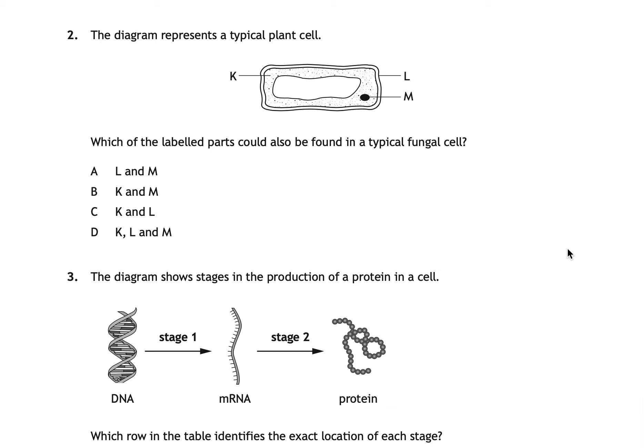Question two shows a typical plant cell with three labelled parts — K, L and M — and asks which could also be found in a typical fungal cell. The answer is D: all three. K is the cytoplasm, L is the cell wall, and M is the nucleus. The only thing not found in a fungal cell would be the vacuole in the middle, but the vacuole has not been labelled, so it's a bit of a trick question.